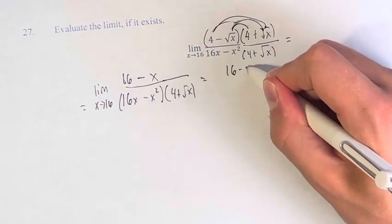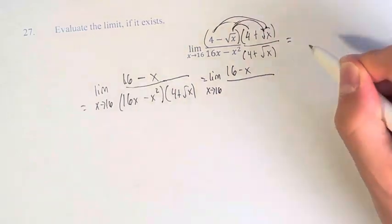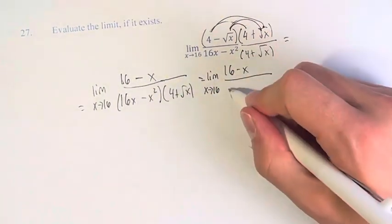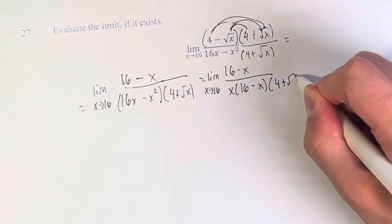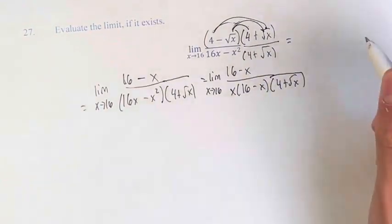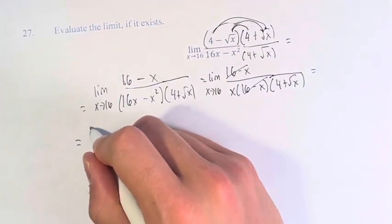We did this because now if we take out an x from these terms here, we have x times 16 minus x. Don't forget, 4 plus the square root of x. And now we can cancel out 16 minus x from the numerator and the denominator.